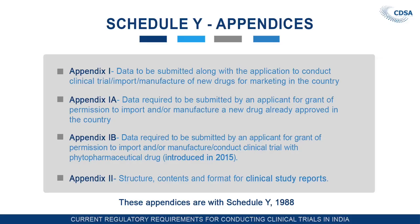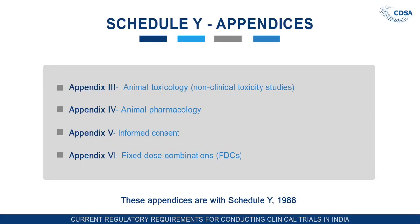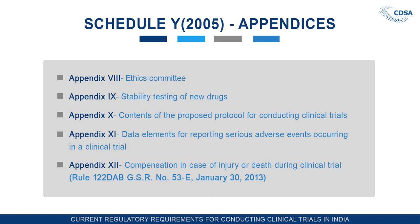Appendix 2 covers structure, content and format for clinical study reports. Appendix 3 covers animal pharmacology and animal toxicology. Appendix 4 is animal pharmacology. Appendix 5 is informed consent. Appendix 6 covers fixed dosage combination. Appendix 7 is undertaking by the investigator. Appendices 7 to 11 were added after 2005. Appendix 8 relates to the ethics committee. Appendix 9 is stability testing of new drugs. Appendix 10 is content of the proposed protocol for conducting clinical trial. Appendix 11 covers data elements for reporting SAEs — serious adverse events — occurring in the clinical trial. Appendix 12 is related to compensation in case of death or injury of a clinical trial subject.